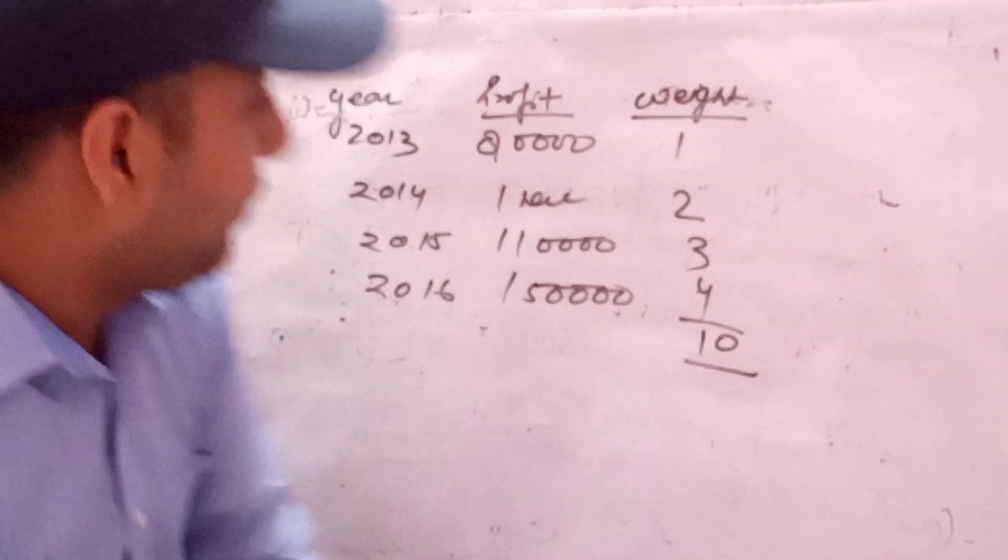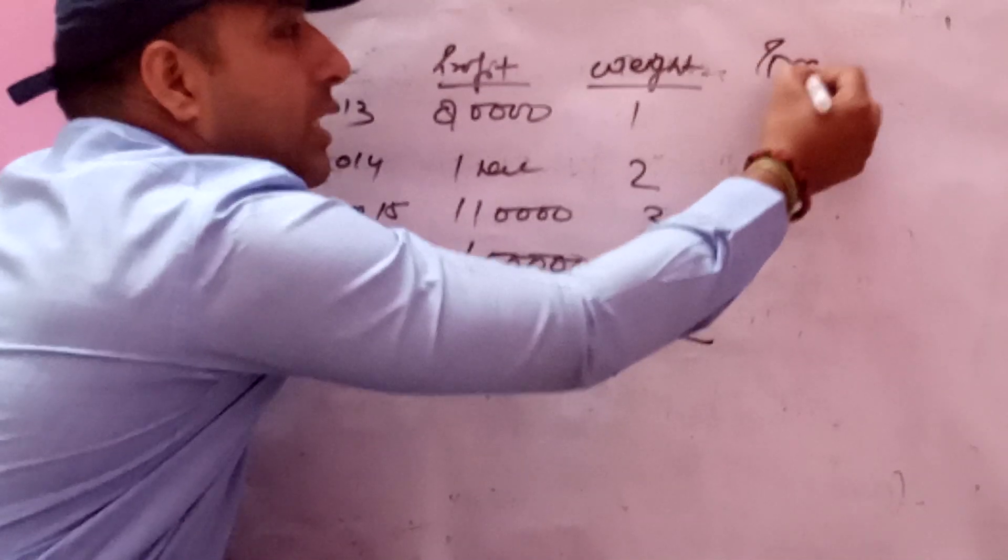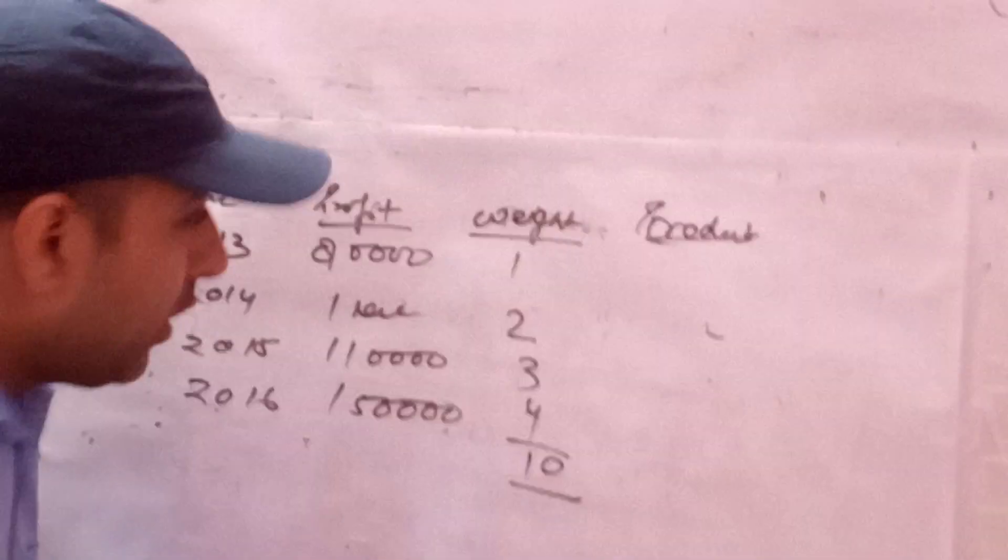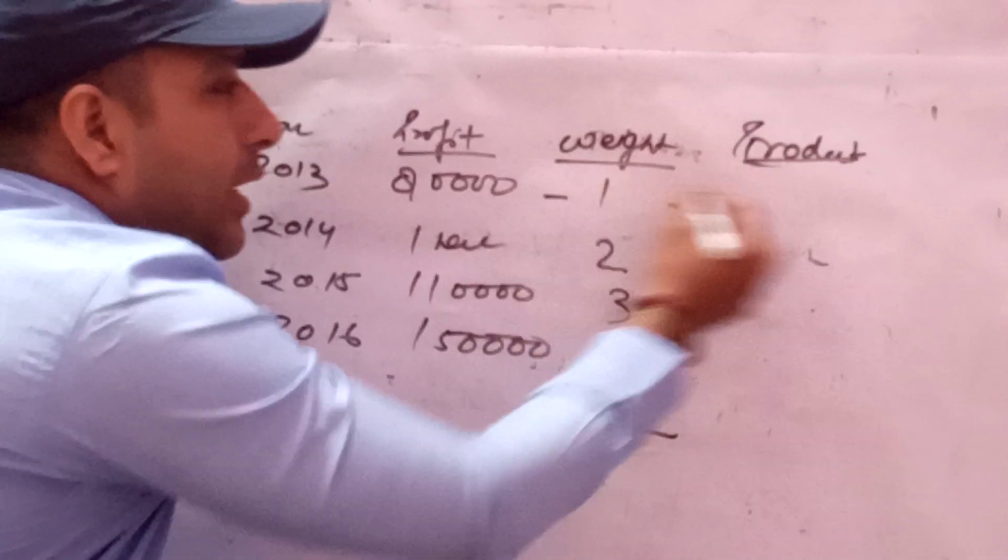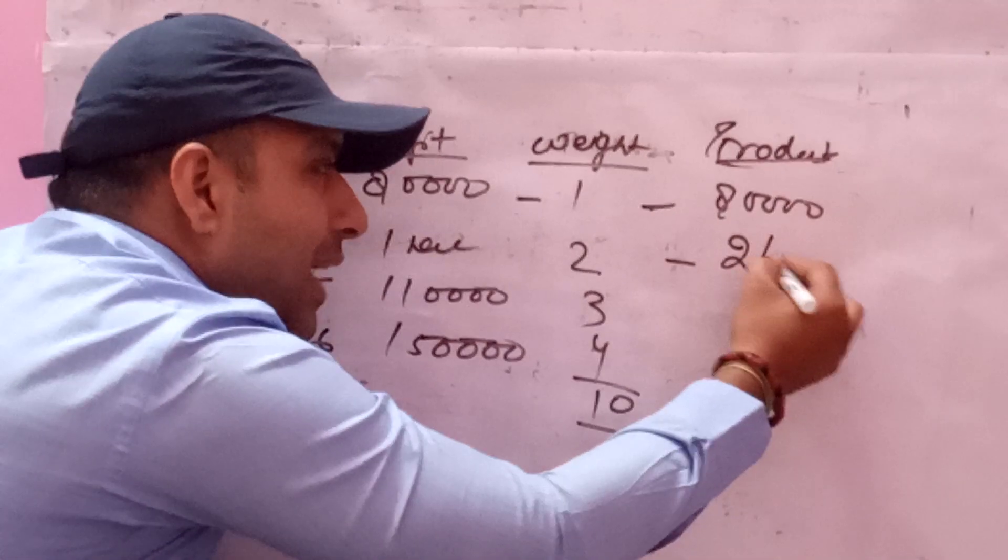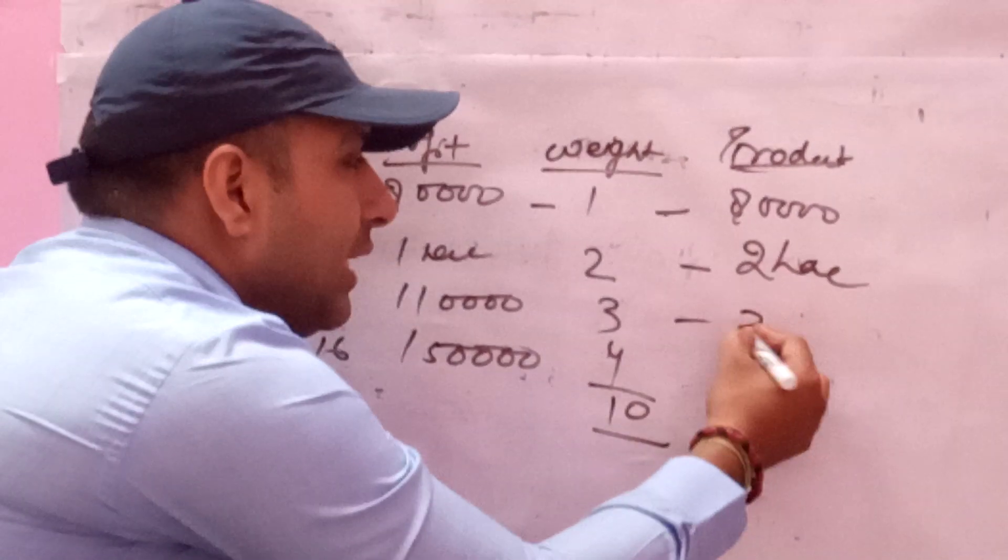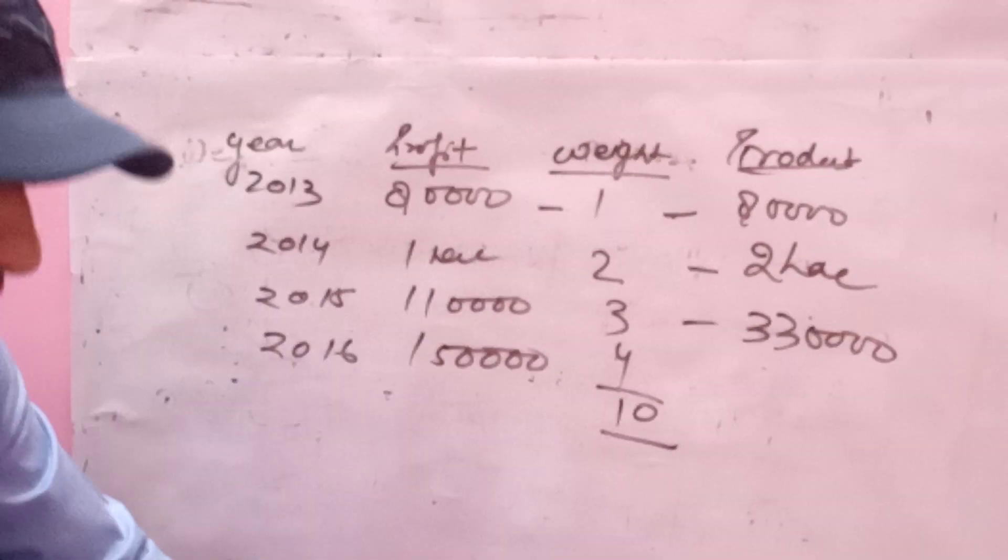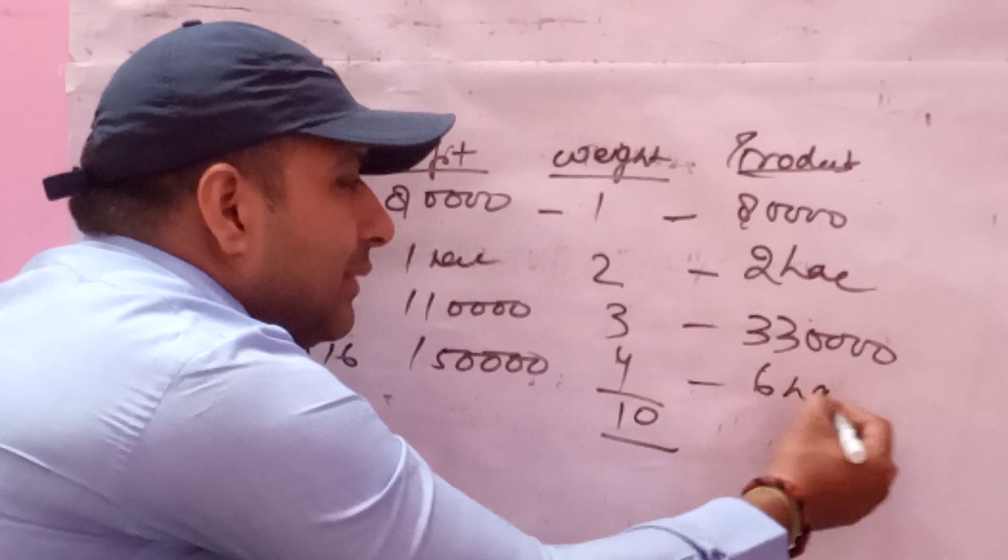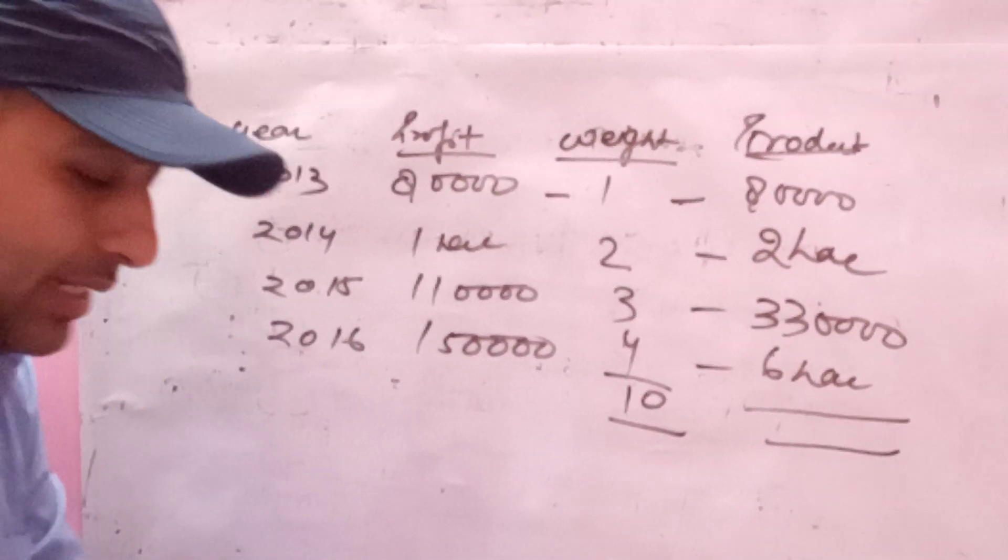80,000 into 1 equals 80,000. 1 lakh into 2 equals 2 lakhs. 1 lakh into 3 equals 3 lakhs. 1 lakh 50,000 into 4 equals 6 lakhs. The total will be 80,000 plus 2 lakhs plus 3 lakhs plus 6 lakhs equals 12 lakhs 80,000.